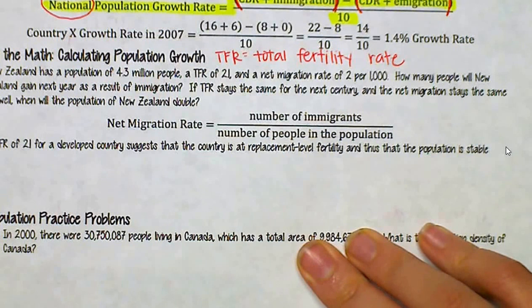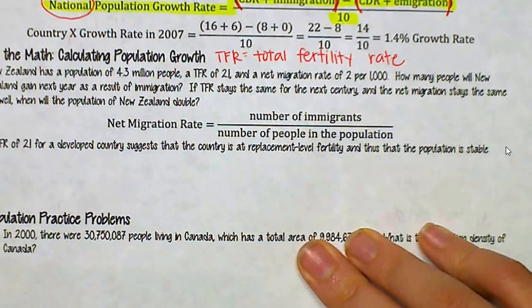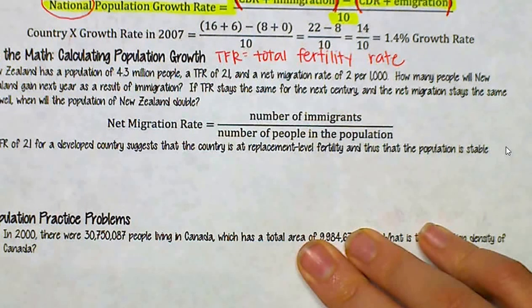Let's highlight the important parts: population of 4.3 million, TFR of 2.1, net migration rate of 2 per thousand. Our first question is how many people will New Zealand gain next year as a result of immigration, and the second question asks for the doubling time — when will the population of New Zealand double?